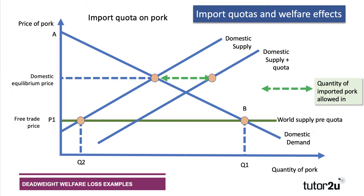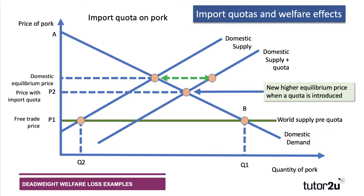The quantity, the size of the quota dictates the size of that dotted green line, which shows the quantity of pork allowed in. With domestic supply plus the quota, that gives us the new equilibrium point in the market. The price will be higher than the free trade price — it's going to be P2 — because you've artificially limited the volume of cheap pork coming in. So we now operate at price P2, where domestic supply plus quota meets the domestic demand curve.